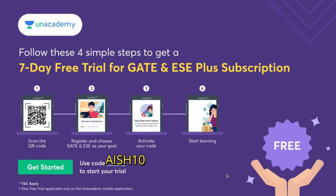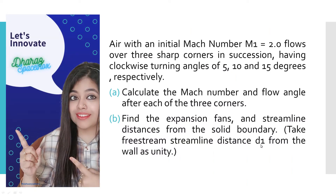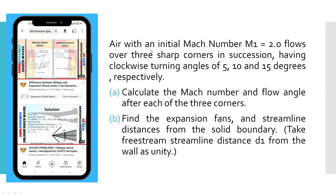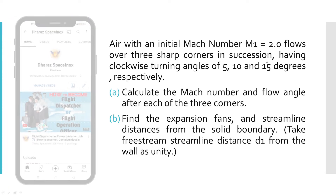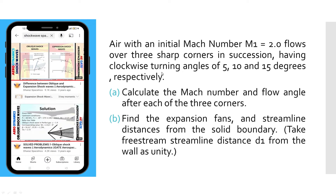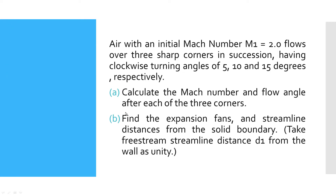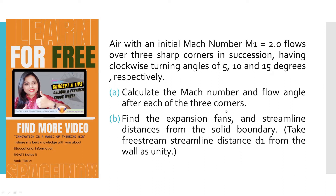Let's look into the solution to this problem. Air with an initial Mach number M1 equals 2 flows over 3 sharp corners in succession, having clockwise turning angles of 5, 10, and 15 degrees respectively. Calculate the Mach number and the flow angle after each of the three corners.